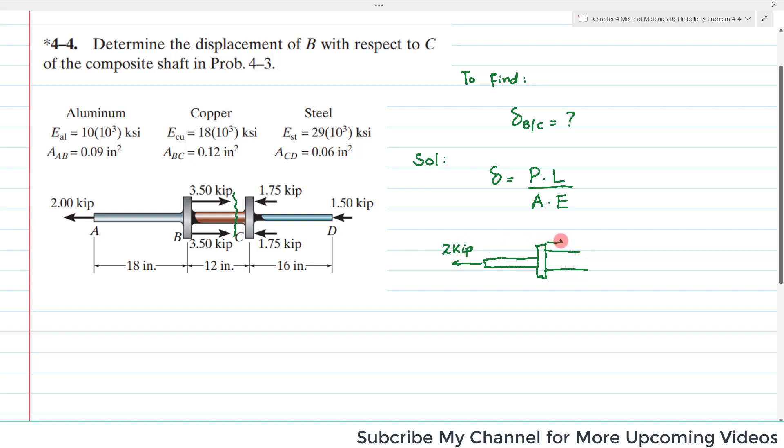At this end, one load is 3.50 kips, and at the other end the same load is applied, 3.50 kips. When you cut it here, there will be a load equal to P_BC.